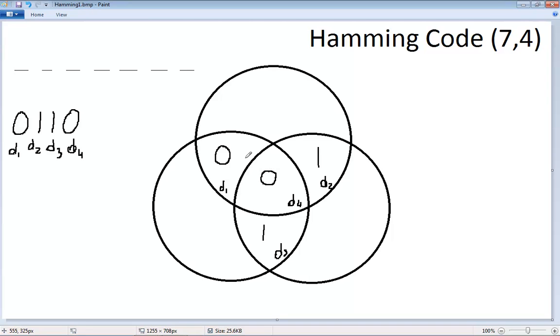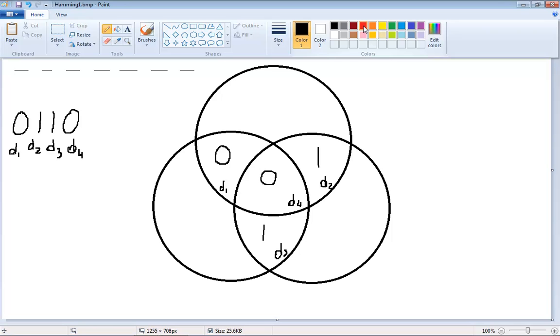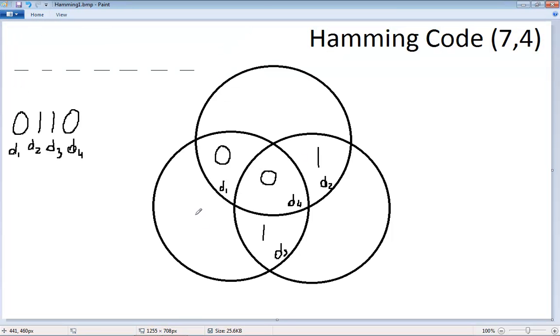This is the data. And now we're going to use parity to create additional numbers. These numbers are going to validate or protect the rest of the message. So parity 1 is going to protect 0, 0, 1. And the even parity requires that we use 1 in this space. So 0, 0, and 1, to have an even number of 1s, we have to add a 1.